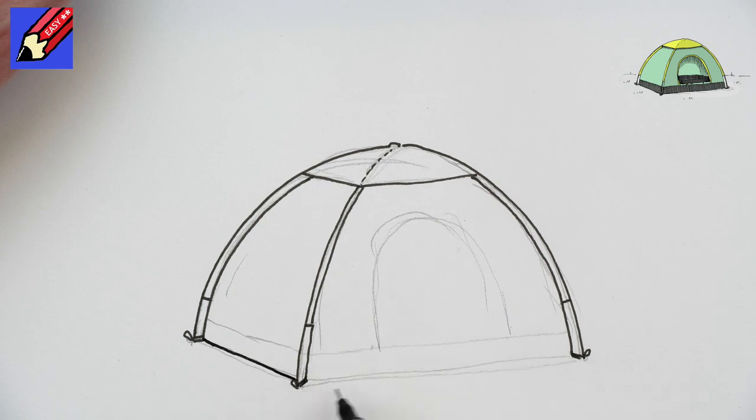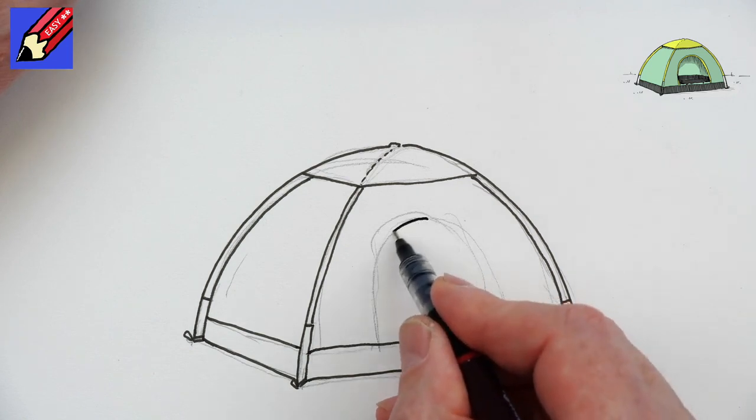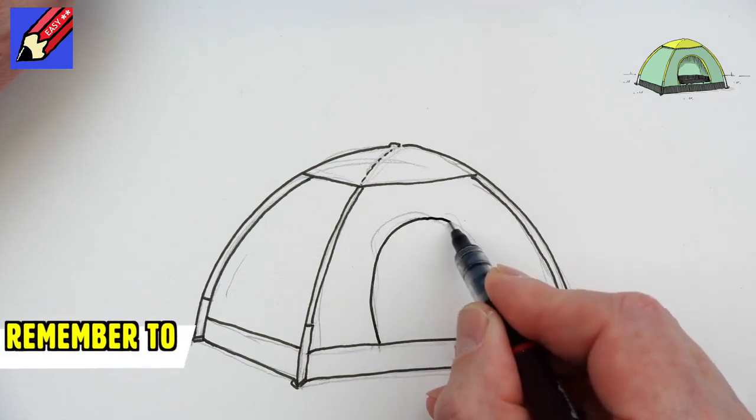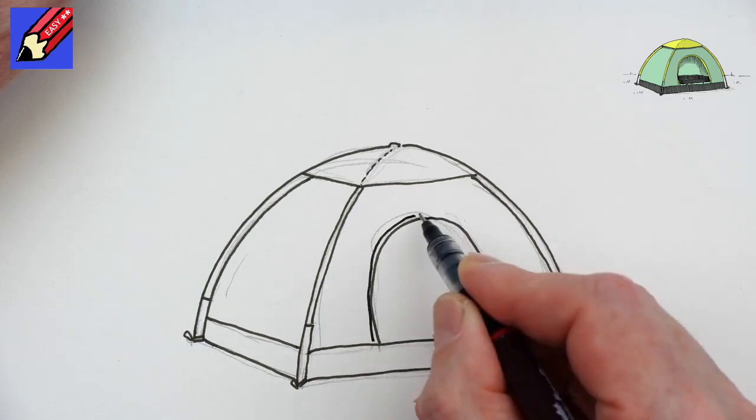Then we can draw along the bottom there. This is the ground sheet part. We can draw this nice curve around there like that, and maybe a little bit around it as well.